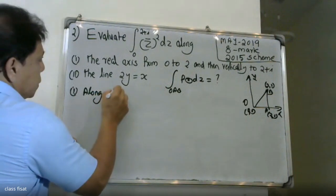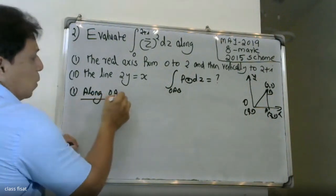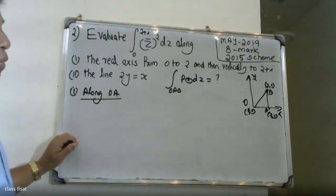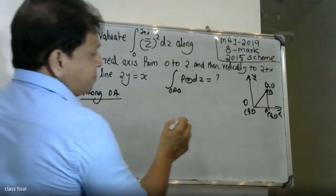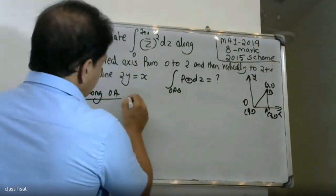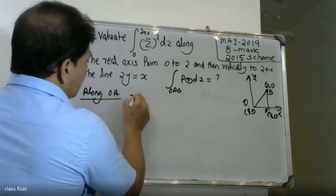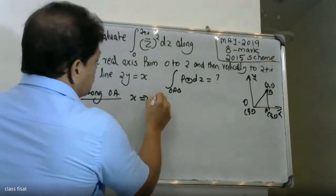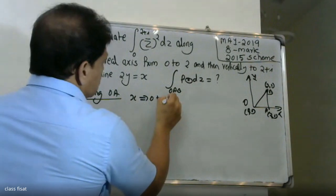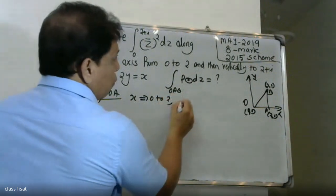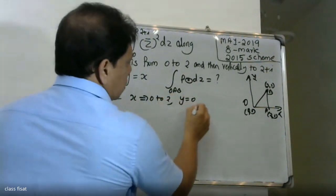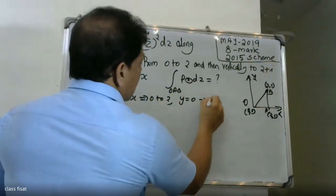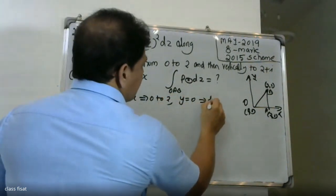On the OA part, from O to A, x varies from 0 to 2. On OA, y equals 0, so dy equals 0.